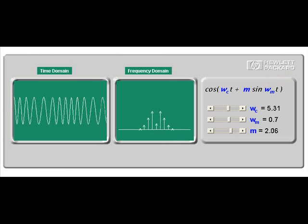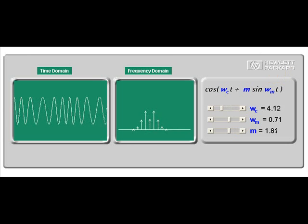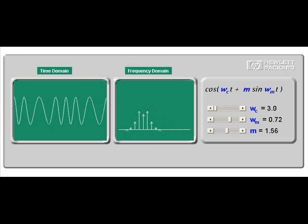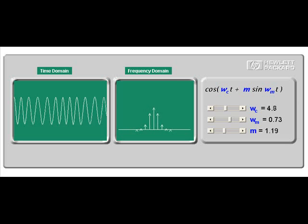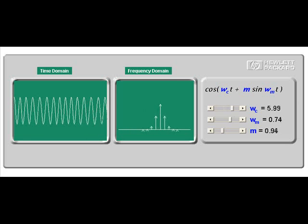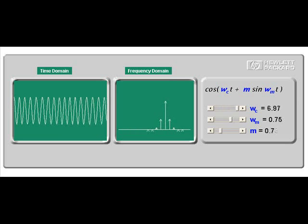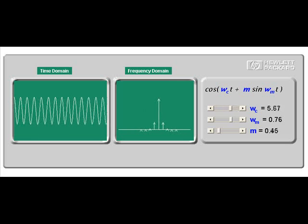The mathematical description of the modulation of the frequency of a sinusoid carrier by another sinusoid is given by the formula here, where omega c is the carrier frequency, omega m is the modulation frequency, and m is the modulation index.